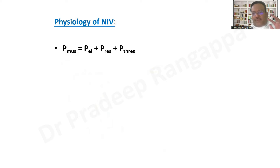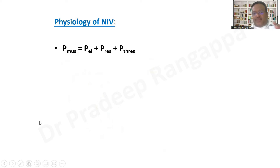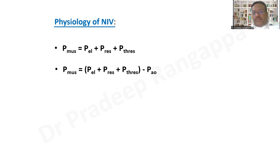HFNO only provides oxygen at a very high flow and has no effect on the key pressures in respiratory physiology. Pmus is the total respiratory muscle work, which must overcome the elastic pressure (Pel), the resistive pressure (Pres), and the threshold pressure (P-threshold), which is the baseline alveolar pressure. Any respiratory effort to optimize ventilation and oxygenation must overcome these elastic, resistive, and threshold pressures, exceeding the alveolar opening pressure.